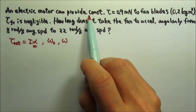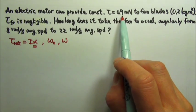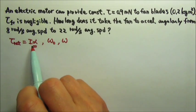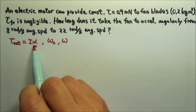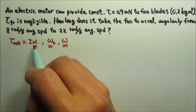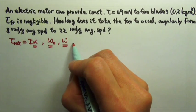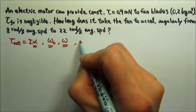Since the fan has a constant torque acting on it, that means it's doing constant angular acceleration motion, which means if we know three things, these three, we can use the kinematics equations to find the time.